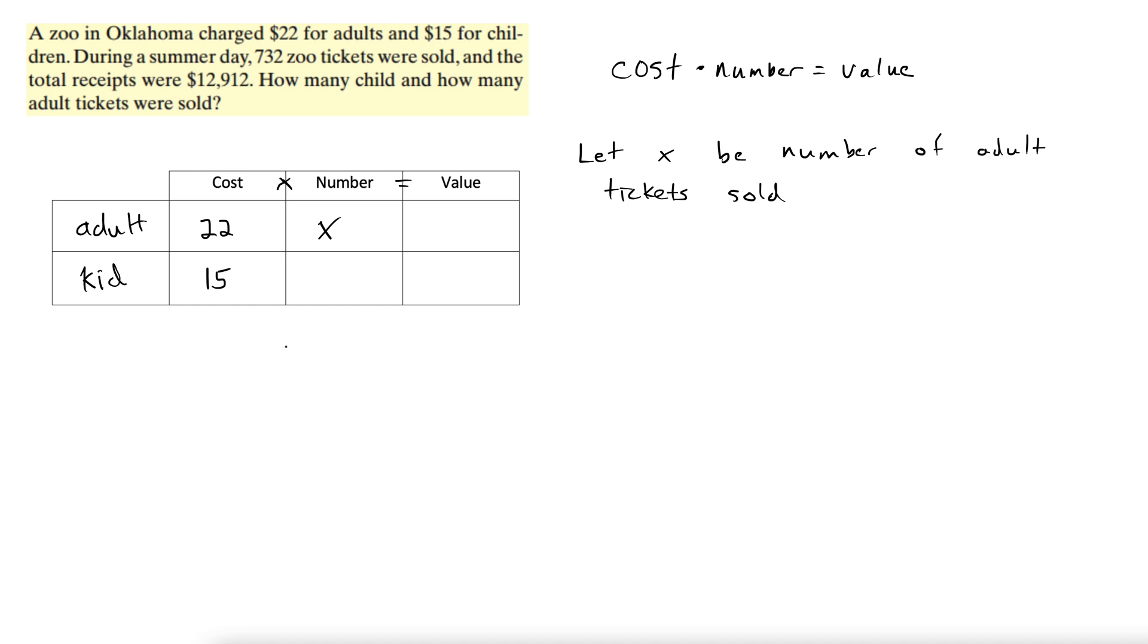So the number of kids tickets sold, let's see here, we had 732 total. Well, if x were the adult number, the number of adult tickets, then the rest must be the number of kid tickets. So how do we represent the rest mathematically? Like this: 732 minus x.